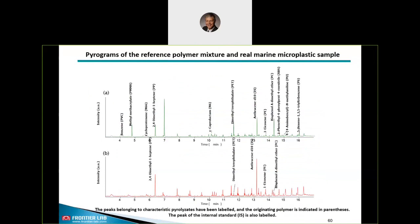This slide shows the proof of principle using the pyrogram of a real marine microplastic sample in red, in comparison to our reference sample in green. Sampling was done by a drag net; the microplastic particles found were mixed and milled. The result is that we found four different types of polymers: polypropylene, PET, polycarbonate, and polyethylene. You can also see an additional peak which is our internal standard, deuterated anthracene.